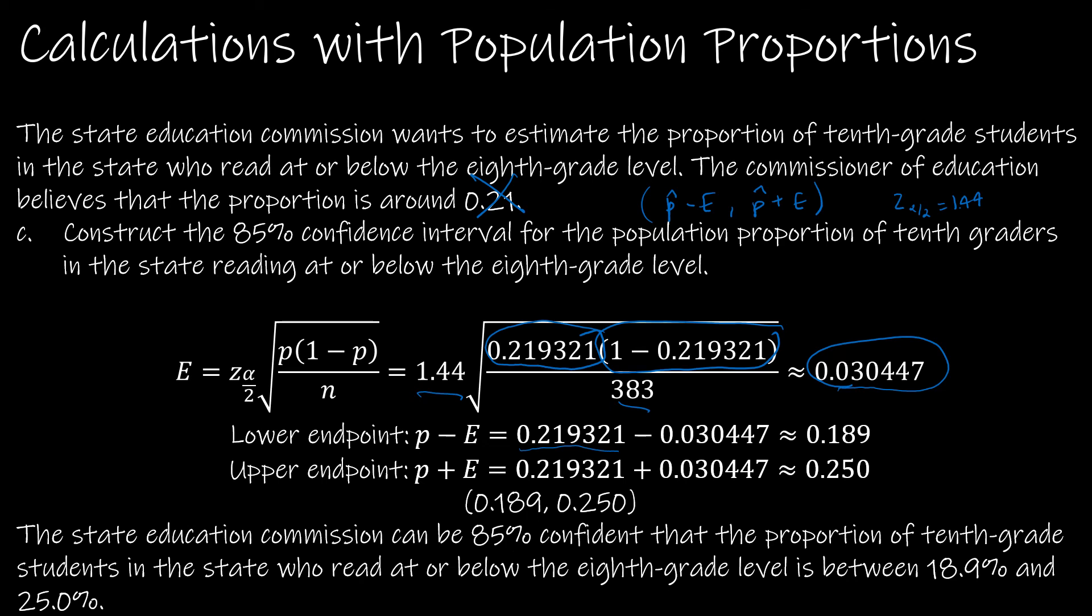What can we say? The state education commission can be 85% confident that the proportion of 10th grade students in the state who read at or below the 8th grade level is between 18.9% and 25%.